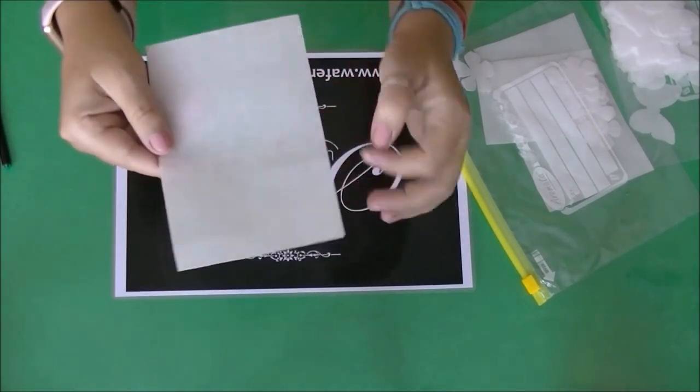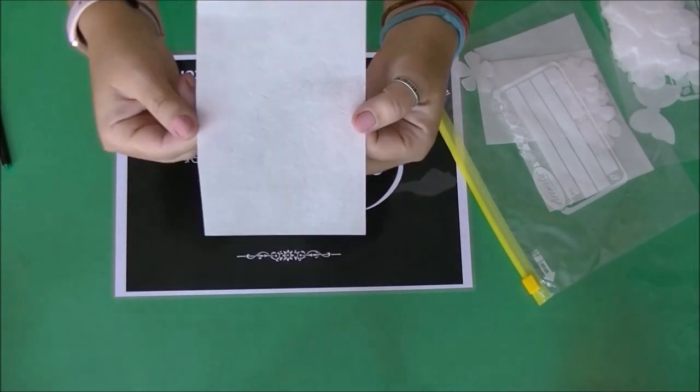Wafer paper 0.27 to 0.35 millimeter. Rough side, smooth side.